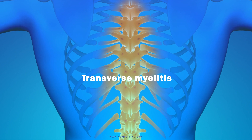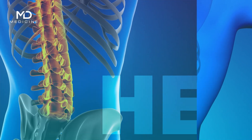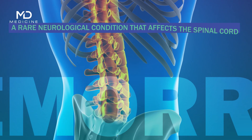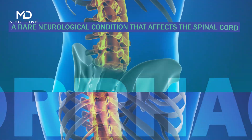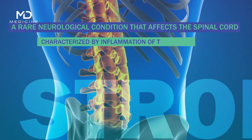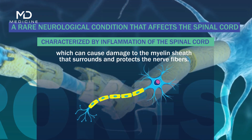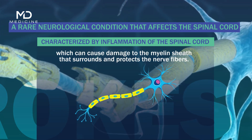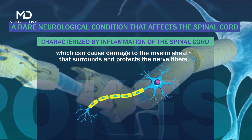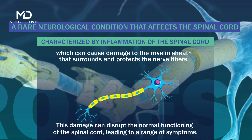Transverse myelitis is a rare neurological condition that affects the spinal cord. It is characterized by inflammation of the spinal cord, which can cause damage to the myelin sheath that surrounds and protects the nerve fibers. This damage can disrupt the normal functioning of the spinal cord, leading to a range of symptoms.